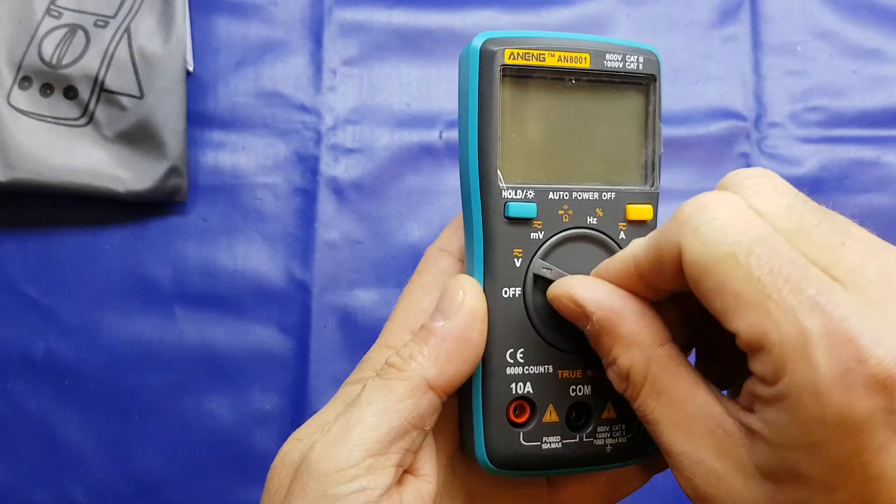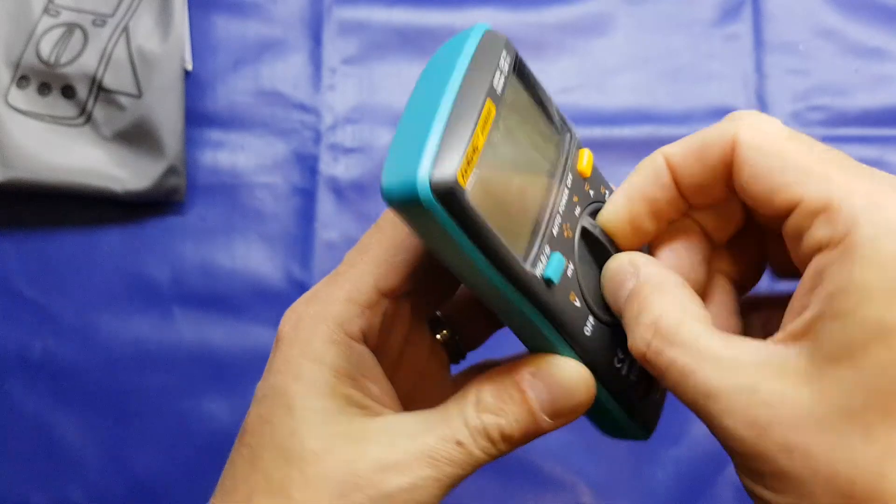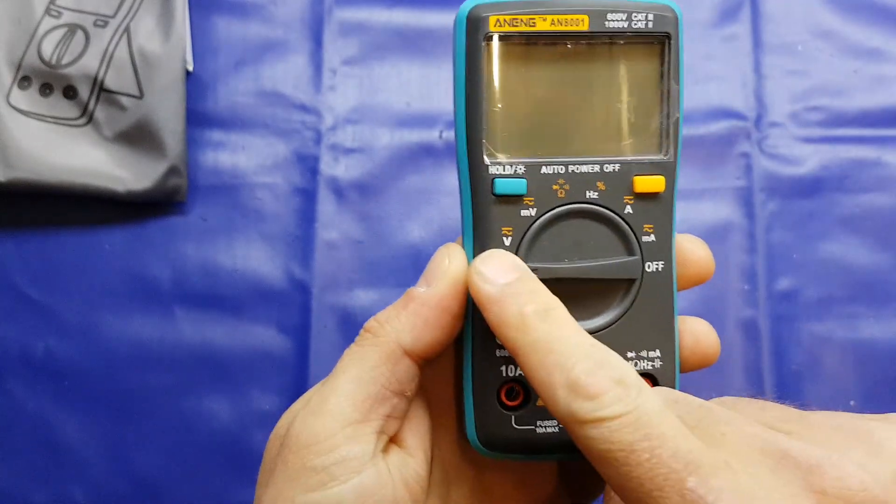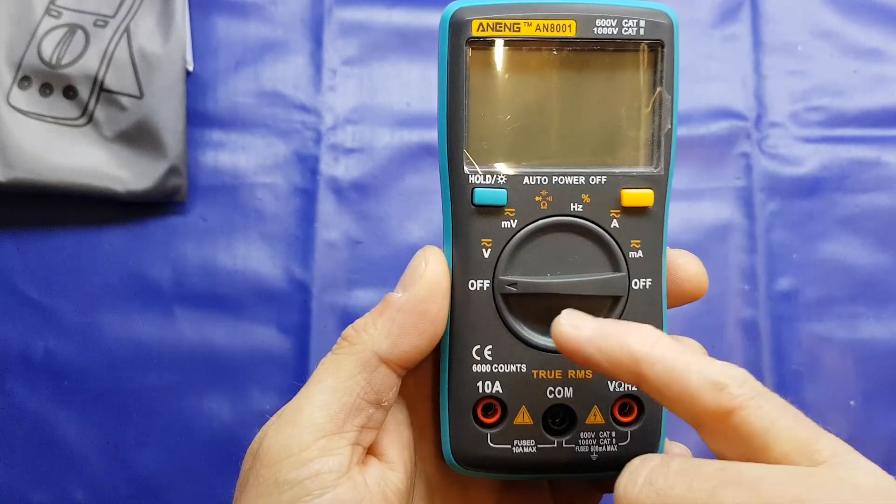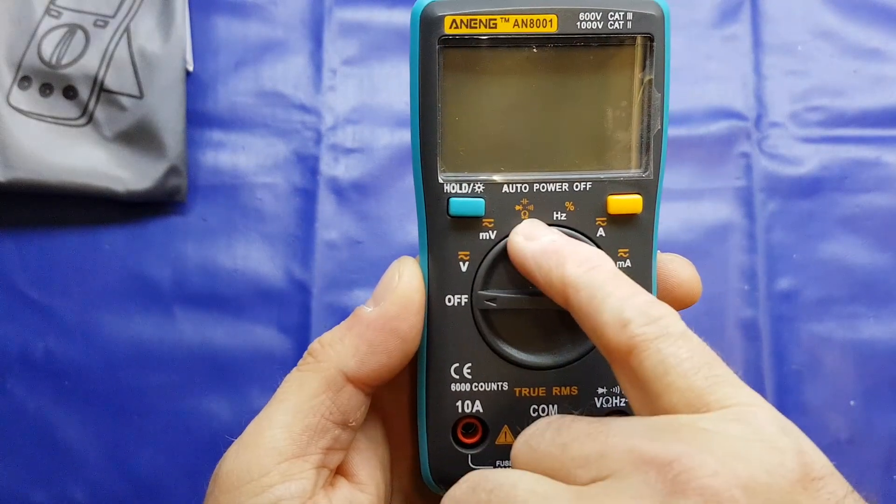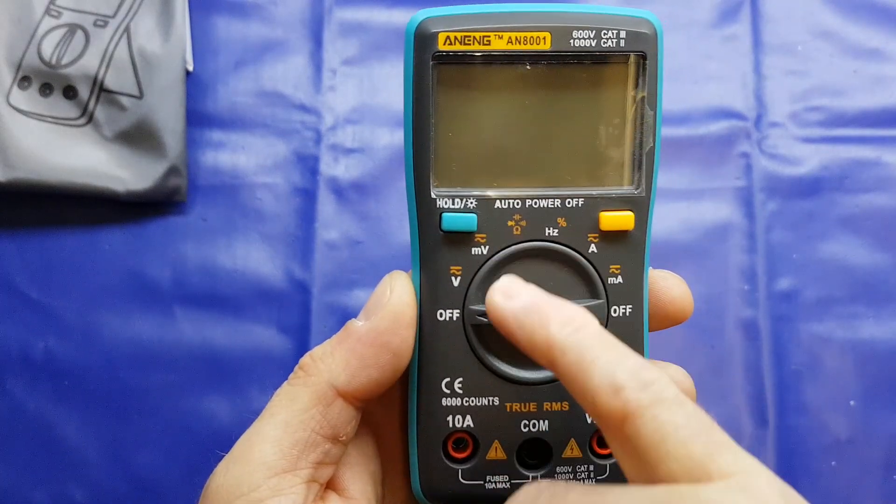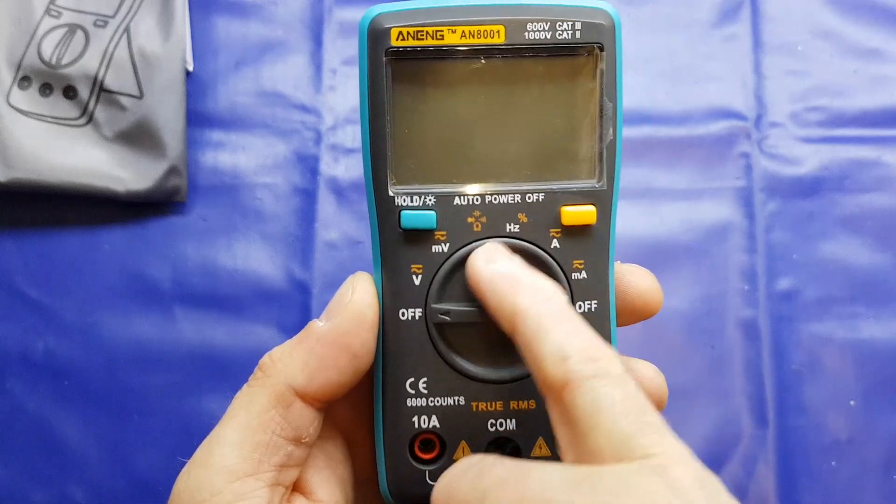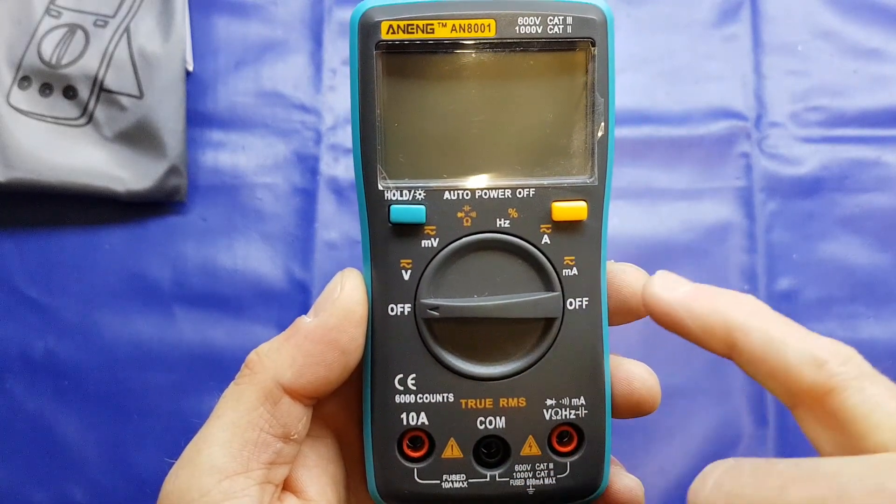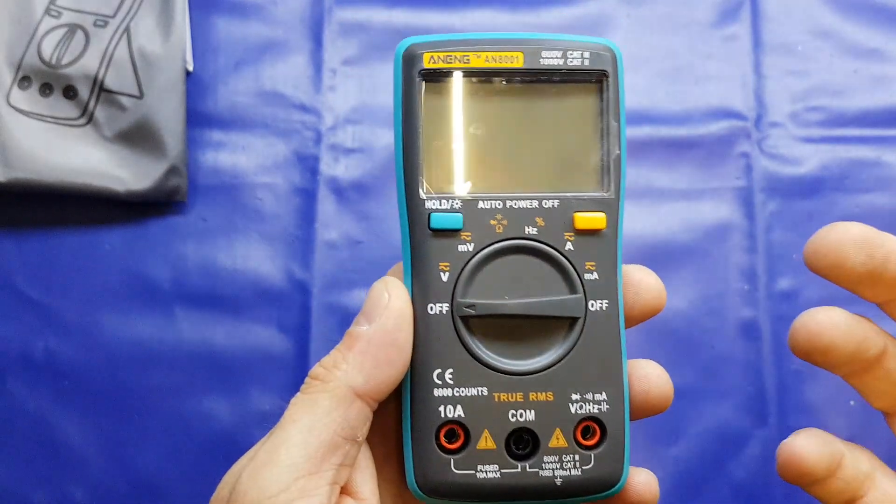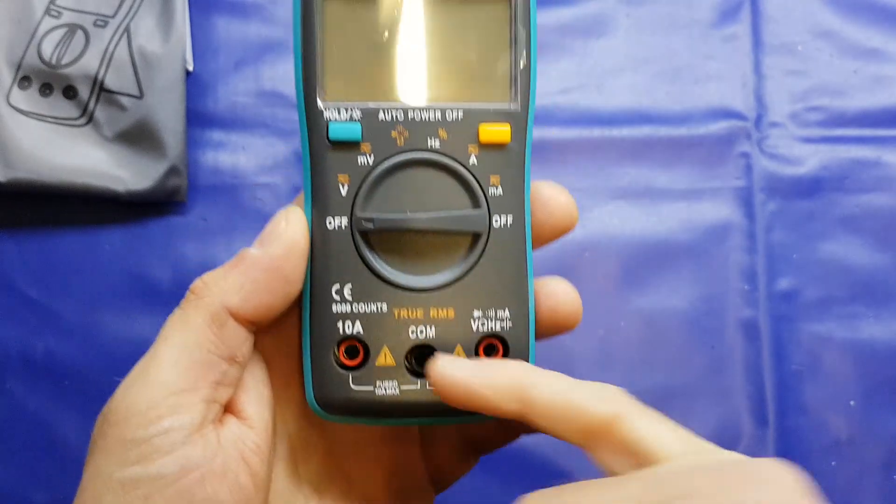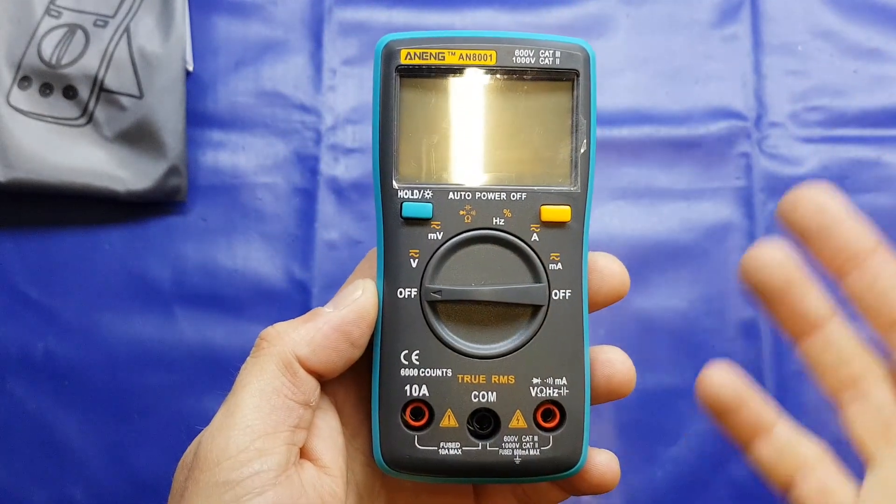So looking around we've got just a rotary selector switch, we've got voltage in terms of volts, millivolts, diode test, capacitance, continuity and resistance, we've got frequency and current. So fairly good, it claims to be true RMS, whether it is I'm not sure or not.